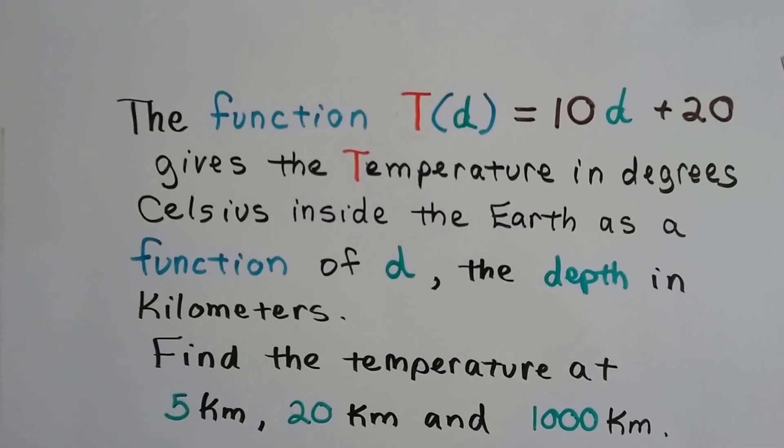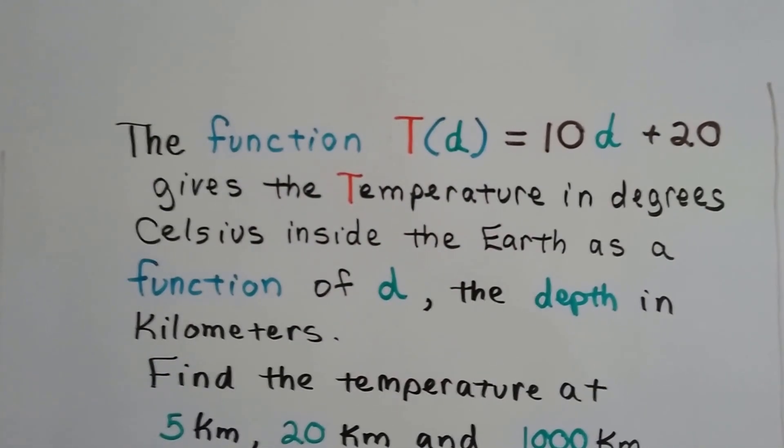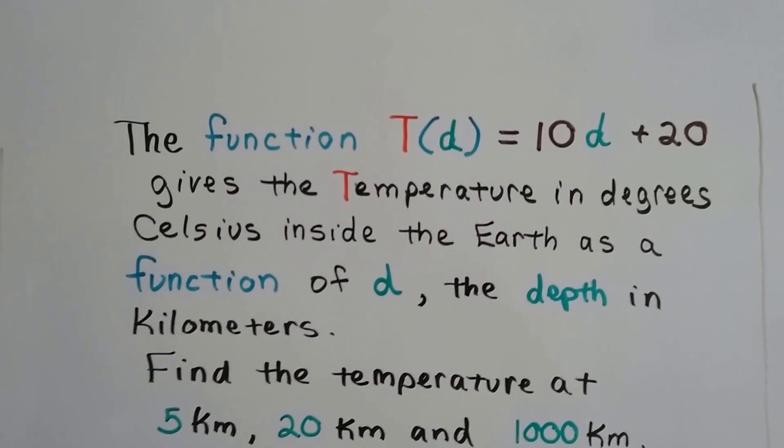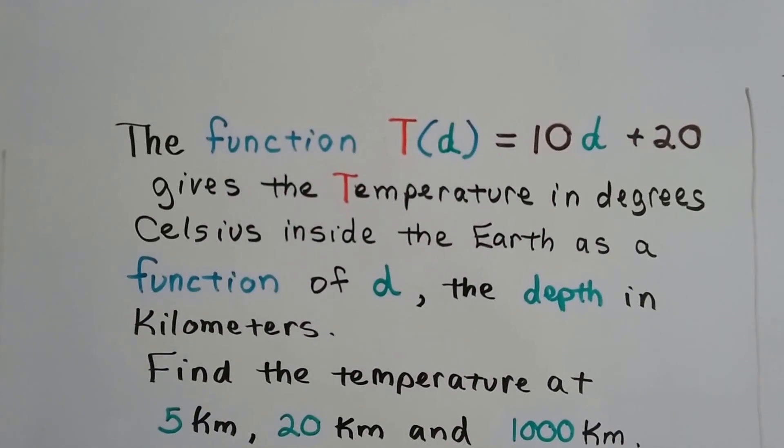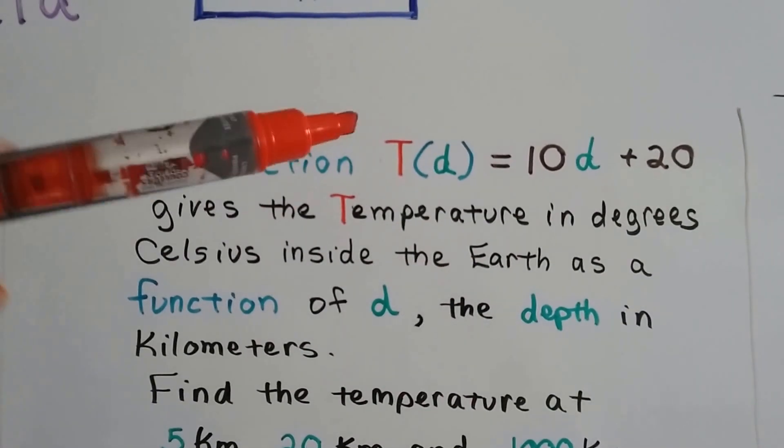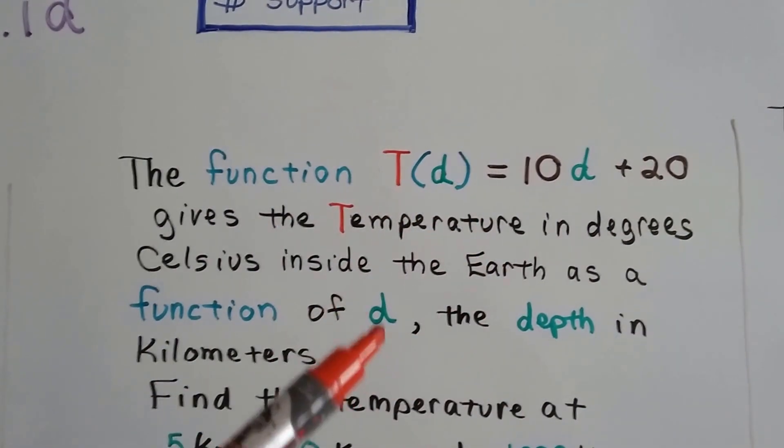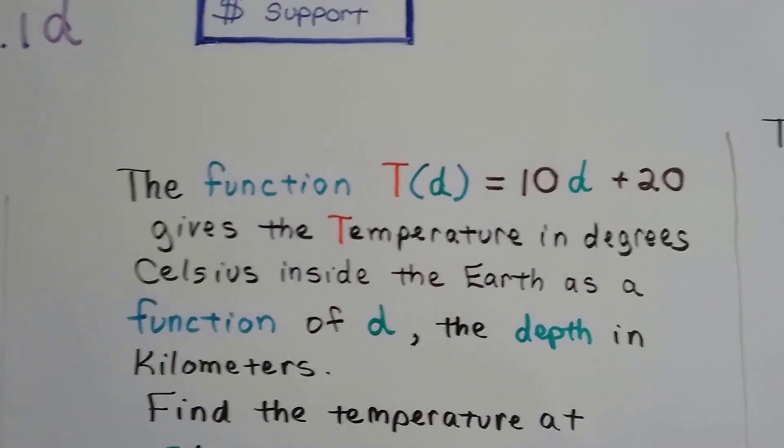Here's our first word problem. The function T(d) = 10d + 20 gives the temperature in degrees Celsius inside the Earth as a function of d, the depth in kilometers. You can see where the letters are coming from. d is for depth and t is for temperature.